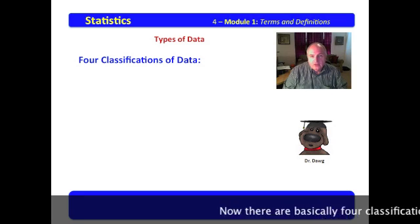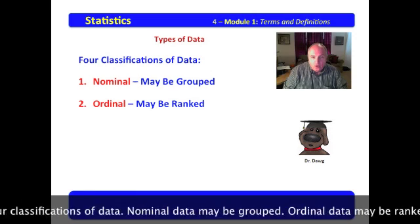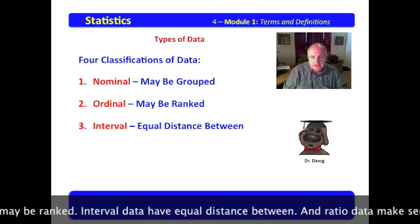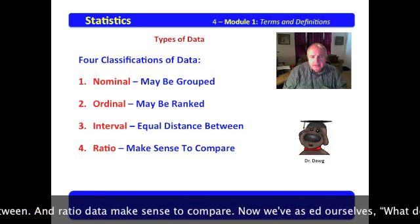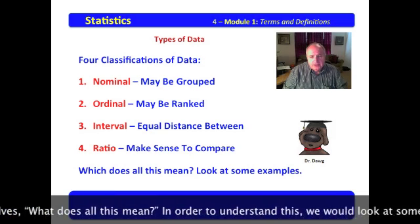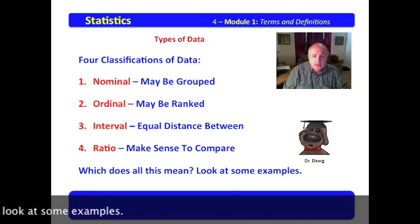Now, there are basically four classifications of data. Nominal data may be grouped. Ordinal data may be ranked. Interval data have equal distance between. And ratio data makes sense to compare. Now, we'd ask ourselves, what does all this mean? In order to understand this, we would look at some examples.